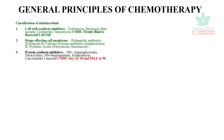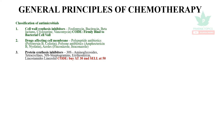Protein synthesis inhibitors — one is 30S and 50S. Code word: buy at 30 and sell at 50. So, 30S inhibitors: Aminoglycosides, Tetracyclines. 50S inhibitors: Streptogramins, Erythromycin, Lincosamides, Linezolid.